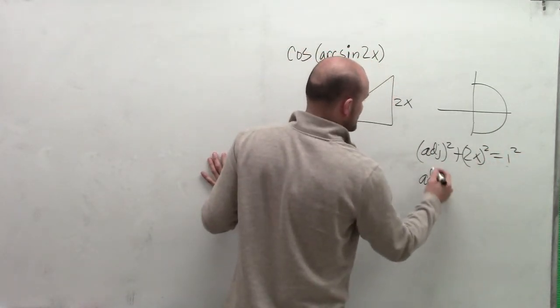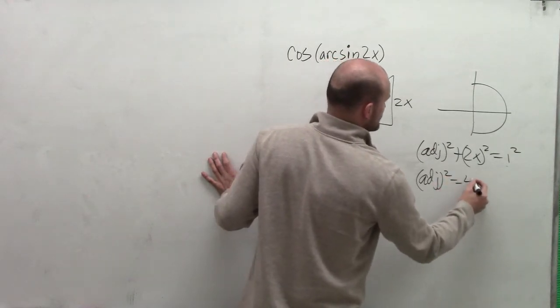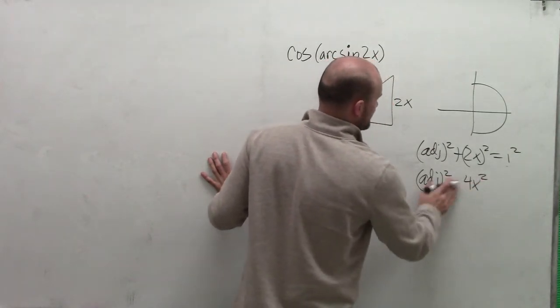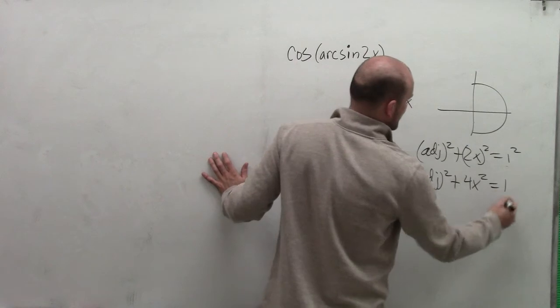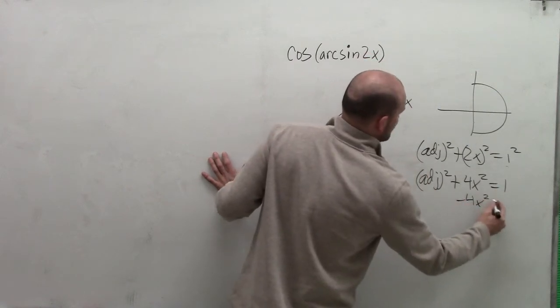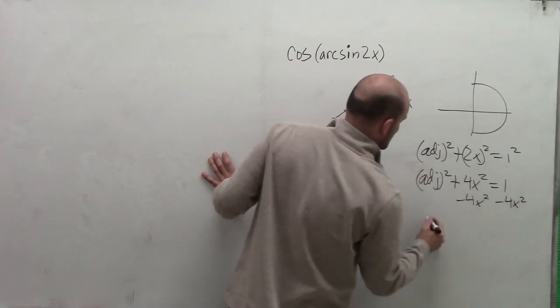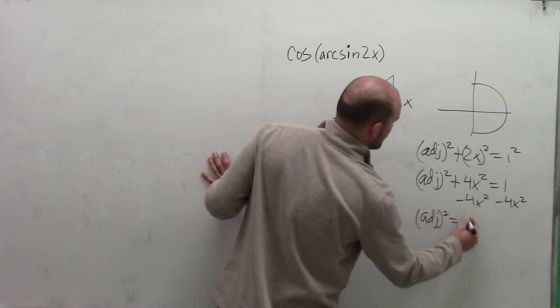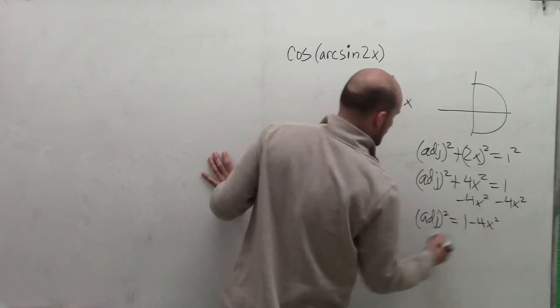So therefore, adjacent squared plus 4x squared equals 1. Now I subtract 4x squared from both sides. So I get my adjacent side squared equals 1 minus 4x squared.